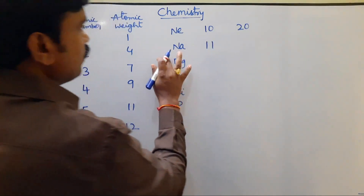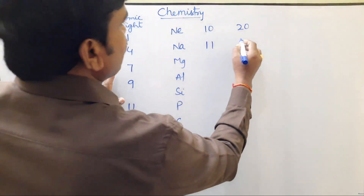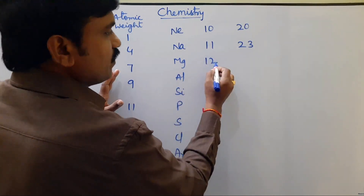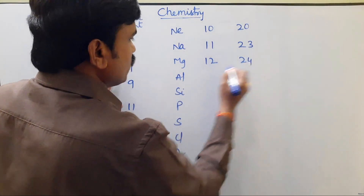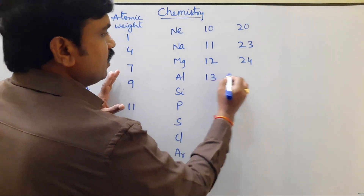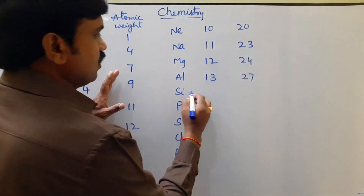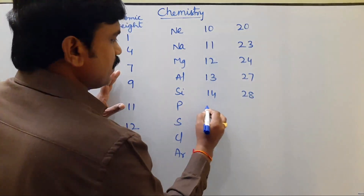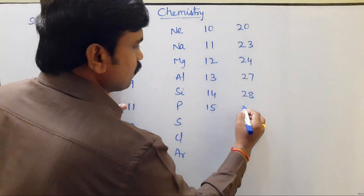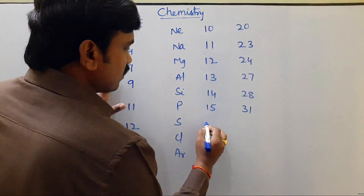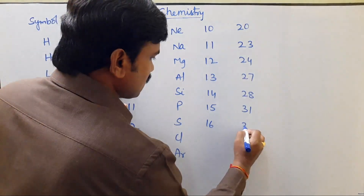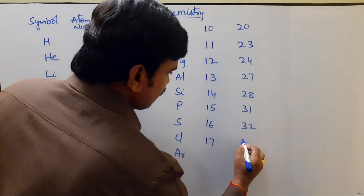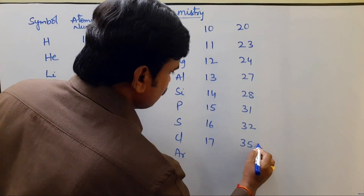The eleventh element is Sodium. Sodium atomic number is eleven, its atomic weight is twenty-three. Magnesium atomic number twelve, its atomic weight is twenty-four. Aluminium atomic number is thirteen and its atomic weight is twenty-seven. Silicon atomic number fourteen and its atomic weight twenty-eight. Phosphorus atomic number fifteen and its atomic weight is thirty-one. Sulphur atomic number sixteen and atomic weight is thirty-two. Chlorine atomic number seventeen and its atomic weight is 35.5.